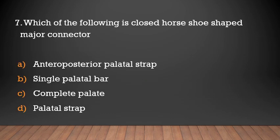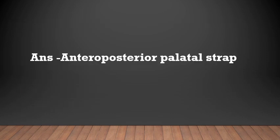Which of the following is a closed horseshoe shaped major connector? Options: anterior-to-posterior palatal strap, single palatal bar, complete palate, palatal strap. The answer is anterior-to-posterior palatal strap — it is a closed horseshoe shaped maxillary major connector.